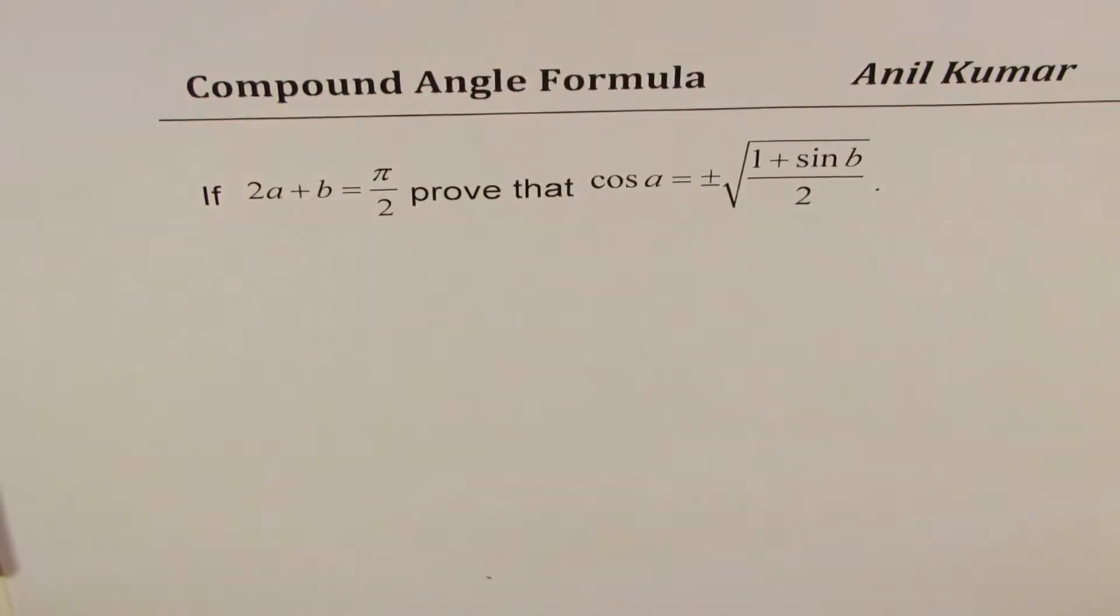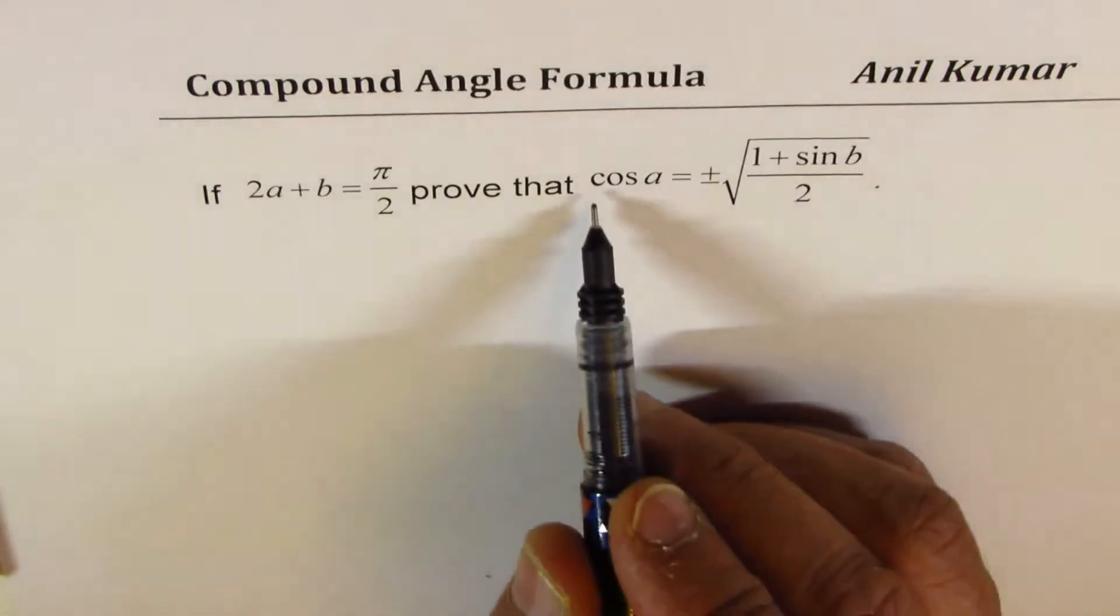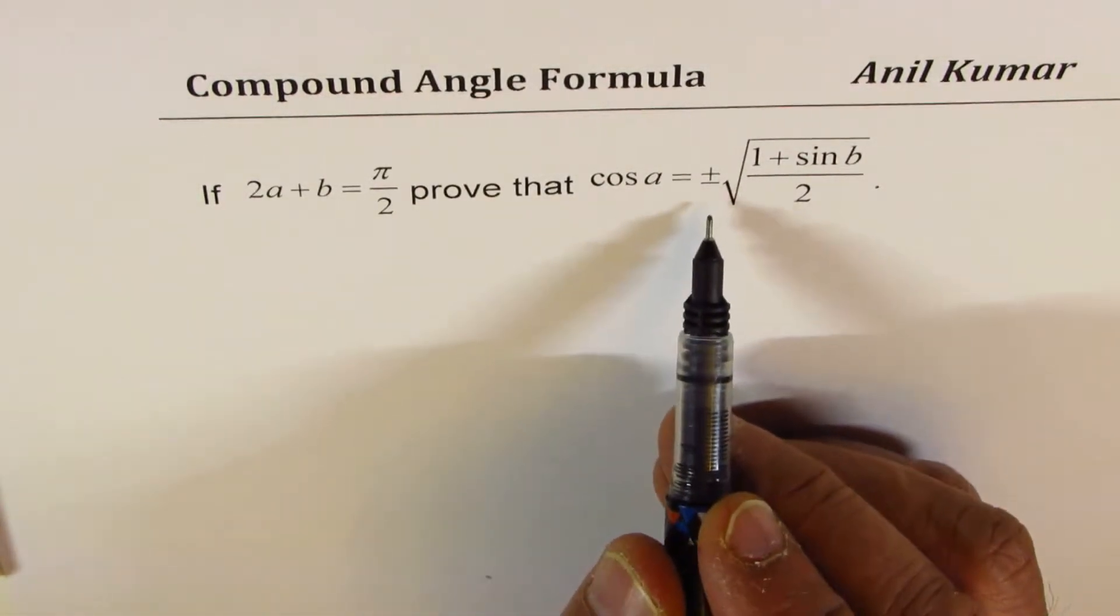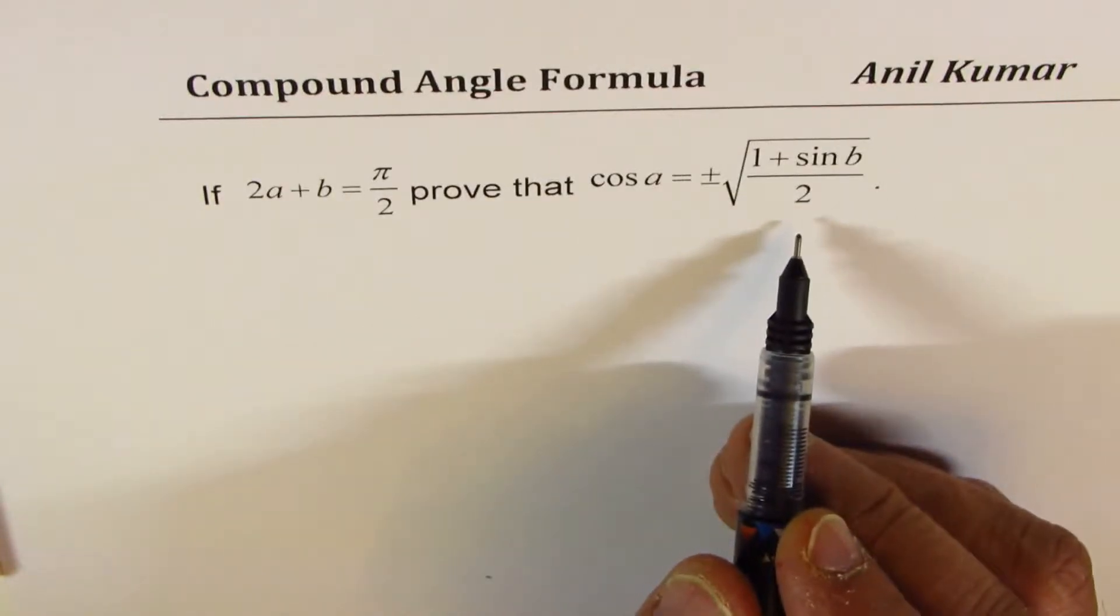I'm Anil Kumar sharing with you an excellent question from my student Melissa. If 2a plus b equals pi by 2, prove that cos a equals plus minus square root of 1 plus sine b divided by 2.